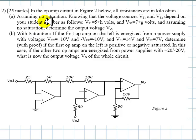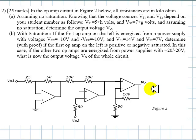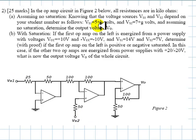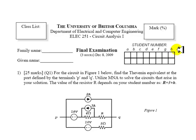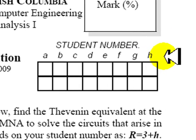This is an exercise on operational amplifiers. For 25 marks, in the op-amp circuit in figure 2, all resistances are given in kilohms. Part A says: assume there is no saturation, knowing that the voltages Vs1 and Vs2 depend on your student number — Vs1 is 5 plus H volts, and Vs2 is 7 plus G volts, where G and H are the two last digits of your student number.